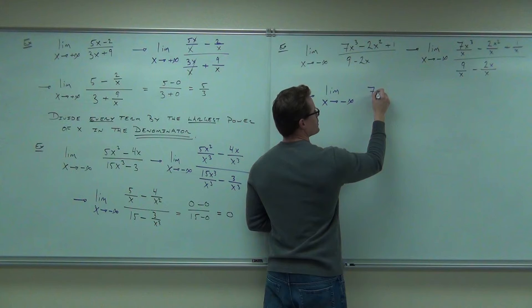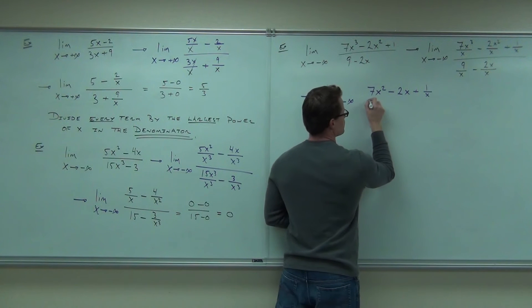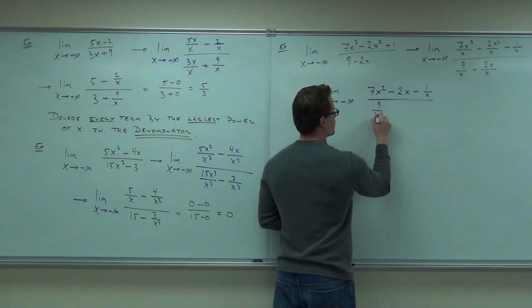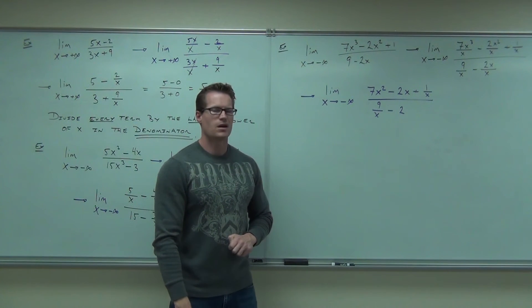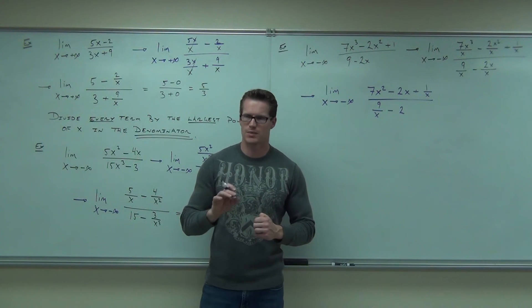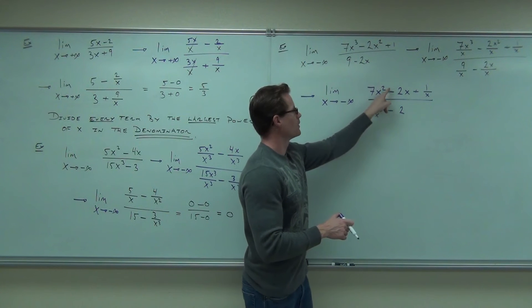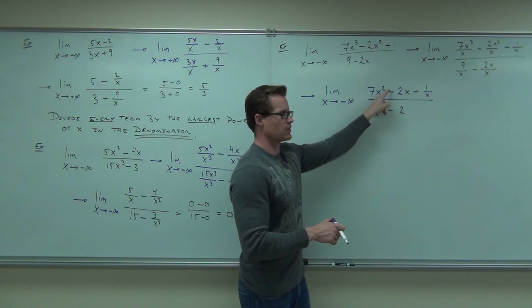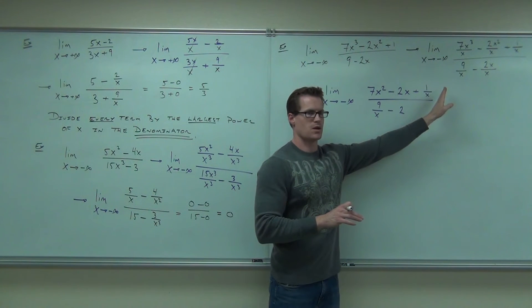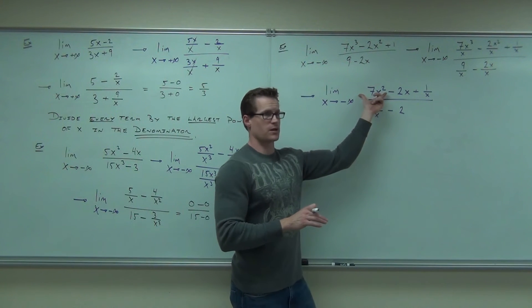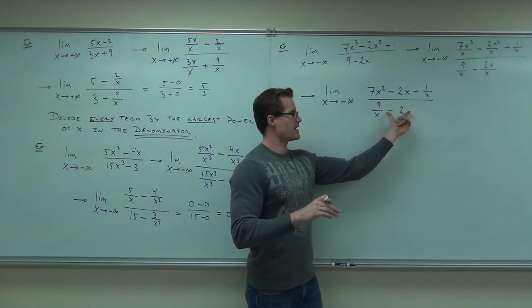Simplify them. You're going to get 7x squared minus 2x plus 1 over x, all over 9 over x minus 2. Follow me on that? Now let's kind of think carefully about what happens here. What happens? Where does that go? That goes to positive infinity. Positive infinity. Does this stuff matter? No. That goes to positive infinity. Agreed? It's x squared. This is 0, but that is a negative 2.